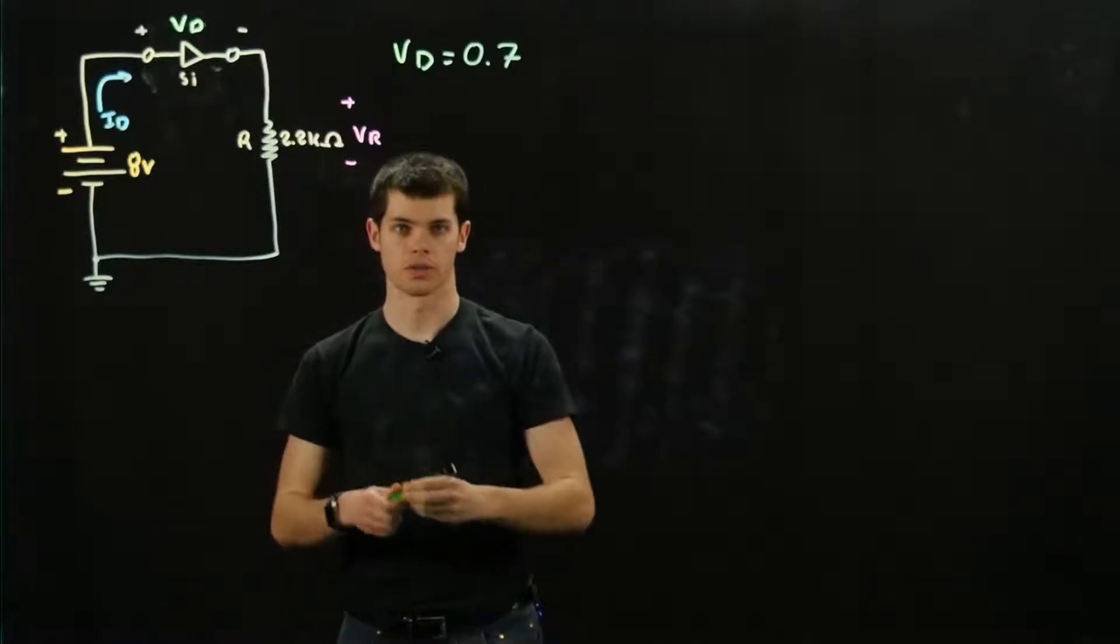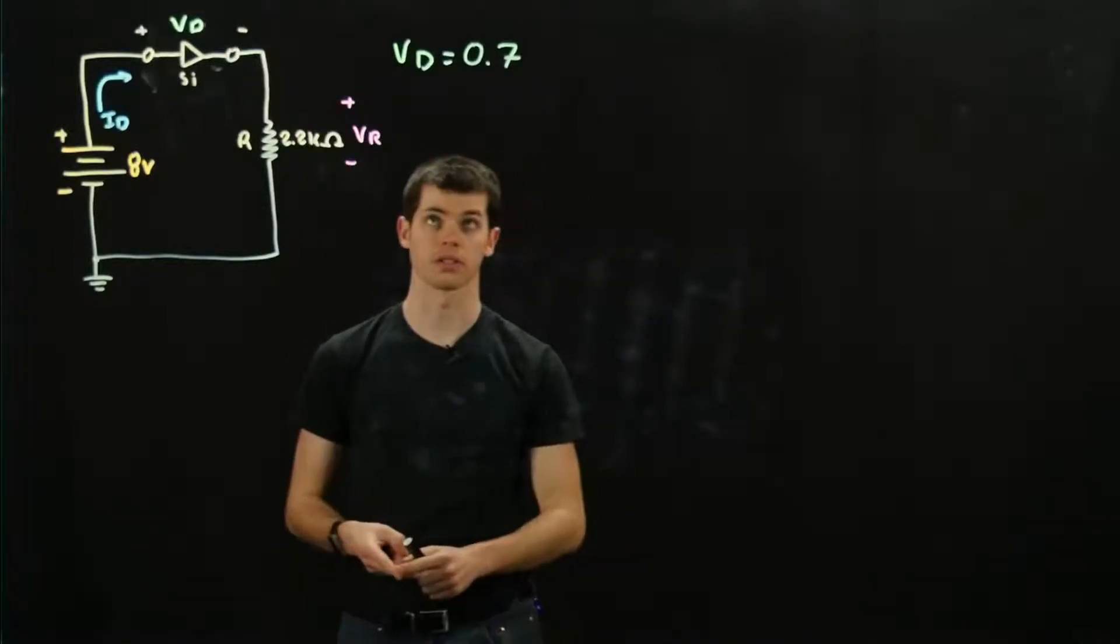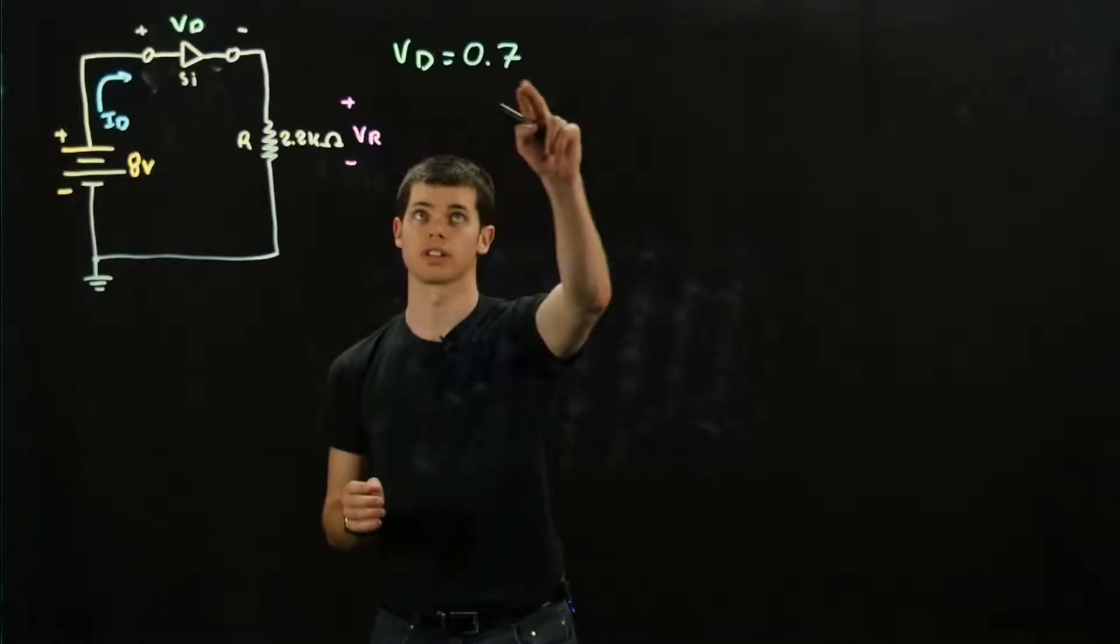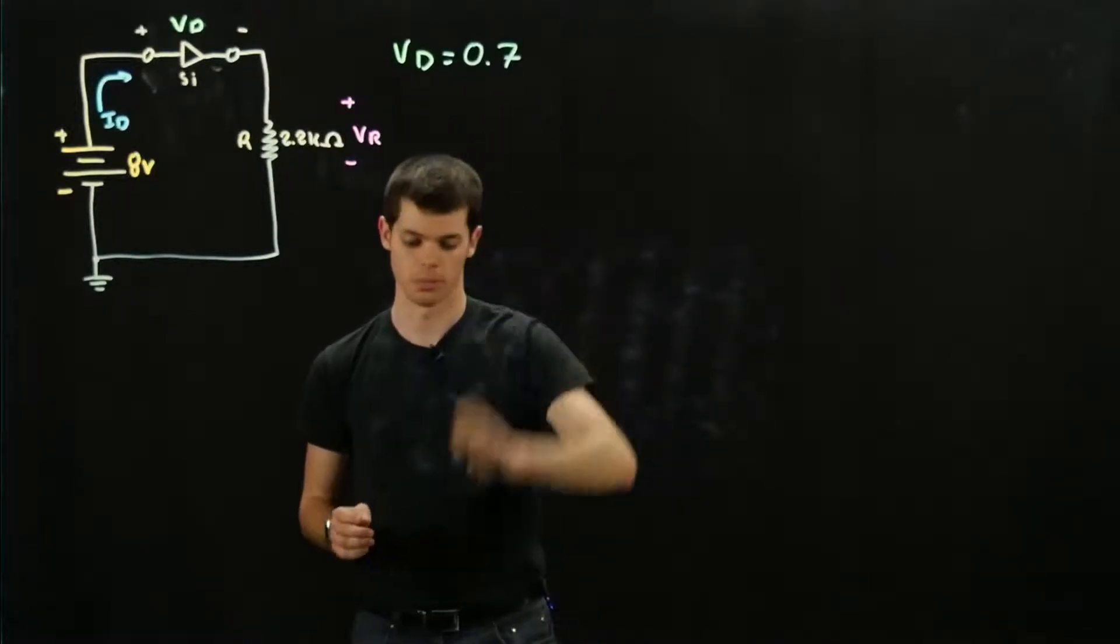There are really three types of diodes: germanium, silicon, and gallium arsenic. For the most part, in this course, we're going to be dealing with silicon, so 0.7 is a very important value.